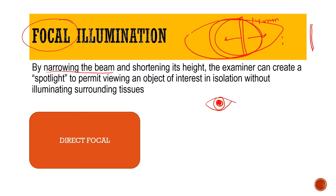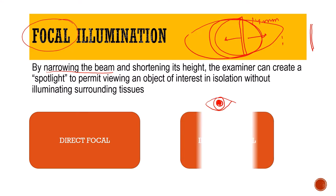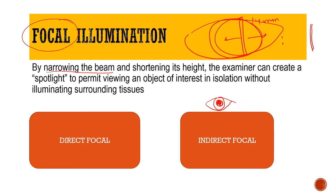Focal illumination is of two types: direct and indirect. In direct illumination, the light source is focused exactly on the point you want to observe. In indirect focal illumination, the light source and the viewing system are not in the same plane — the light is focused slightly behind or in front of the lesion the examiner wants to study. That is called indirect focal illumination, which will be studied in the next video.